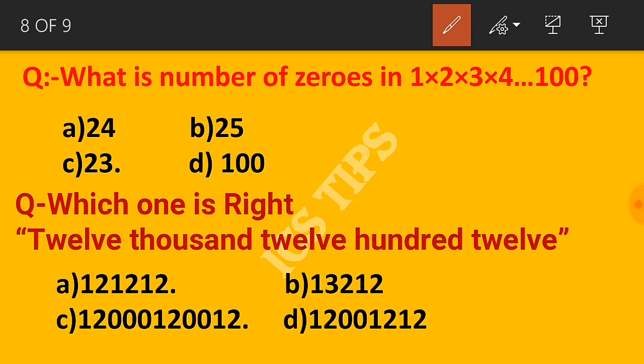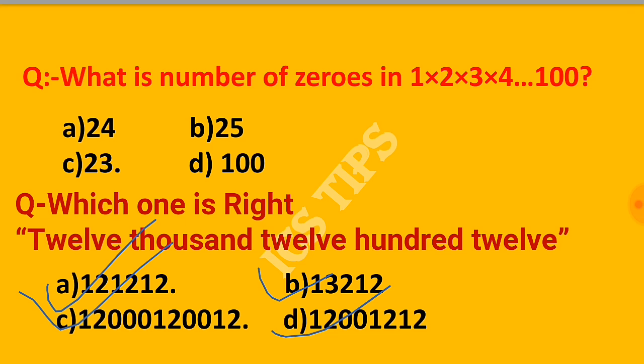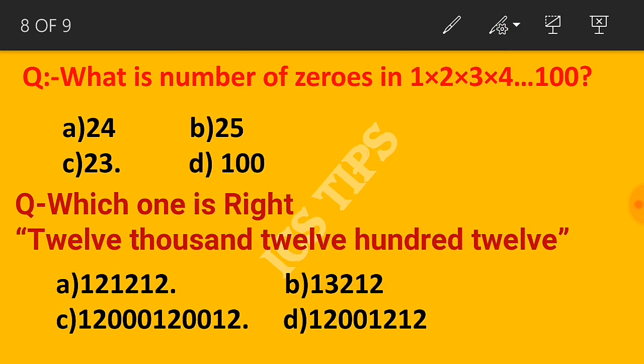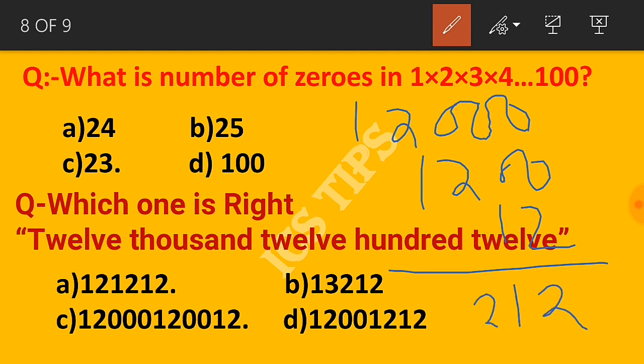Question: Which one is right - 121212? Look at the pattern: 12,000, then 1,200, then 12. The answer is 12,000, 1,200, 12.